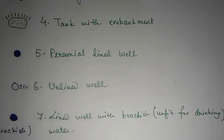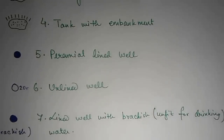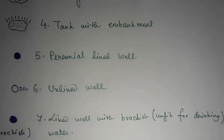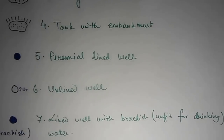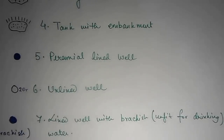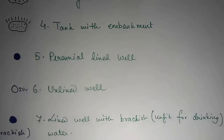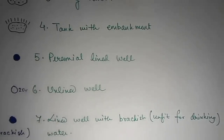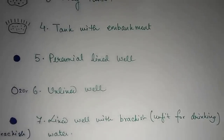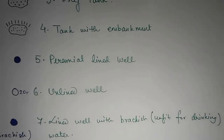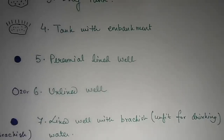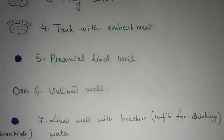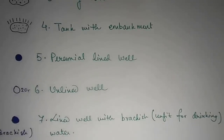Then we have an unlined well — a kaccha well. The blue line means water is present in the well, and 20R means the relative depth of this particular well is 20 meters. So remember, 20R means the relative depth is 20 meters. Number seven is a lined well with brackish water, meaning the water is saline and unfit for drinking.